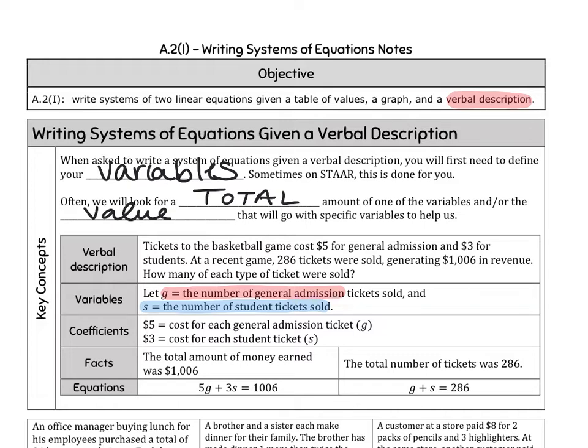So if I go back into my word blurb, now that I know what the g and the s are standing for, I'm going to highlight all the letters and numbers that would go for general admission in red. Here's the word general admission. What number is right in front of that? $5 for general admission. So our general admission tickets cost $5. How much do our student tickets cost? $3.